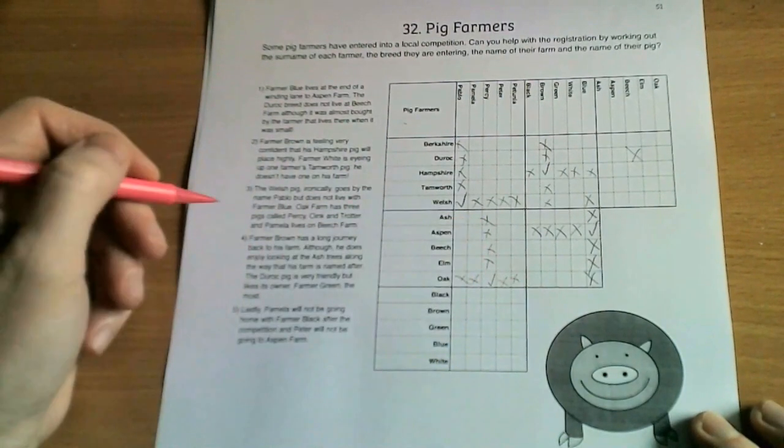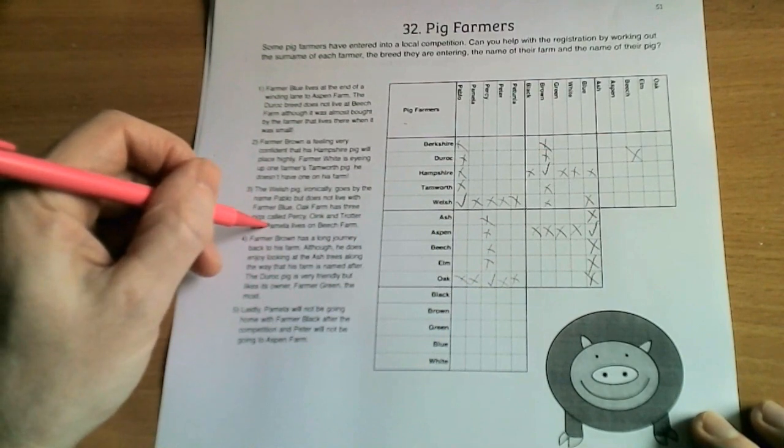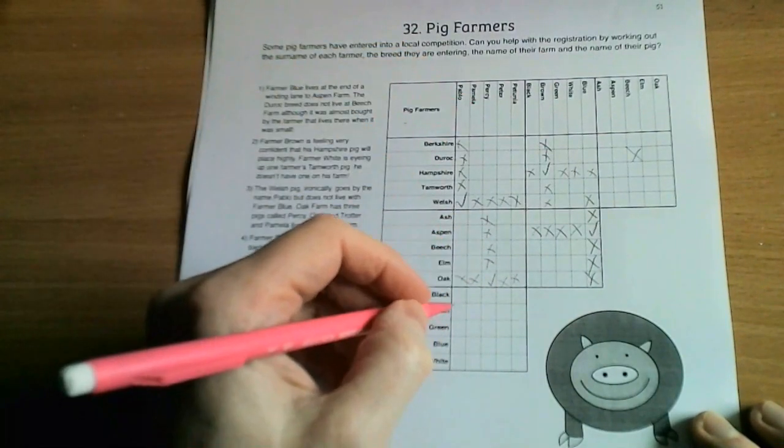Like so, and this first stage is just filling in the information that we're given. We're also told that Pamela lives on Beech Farm, and here's Pamela and here's Beech Farm.